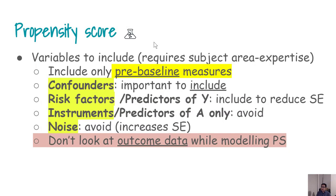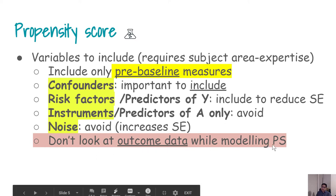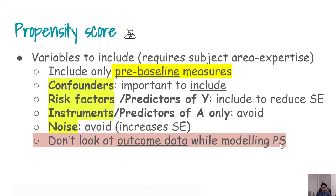There is some literature suggesting what kind of variables to include in the propensity score model. Generally speaking, looking at the outcome data while modeling the propensity score is not suggested. We should use subject area expertise to figure out what variables are associated with both the treatment and the outcome variable, and then adjust for those variables that impact both treatment and outcome in a way that modifies the relationship of interest.